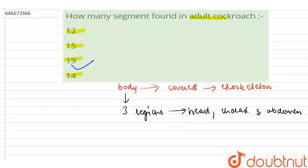Head contains 10 segments, thorax consists of 3 segments, and abdomen consists of 6 segments. So total 19 segments are there in the adult cockroach. The correct option for this question is 19 segments. Thank you.